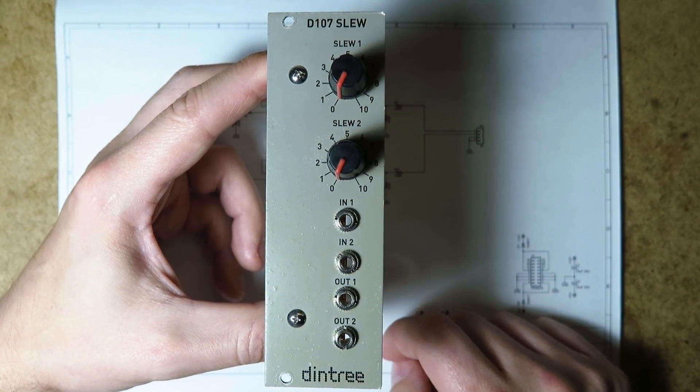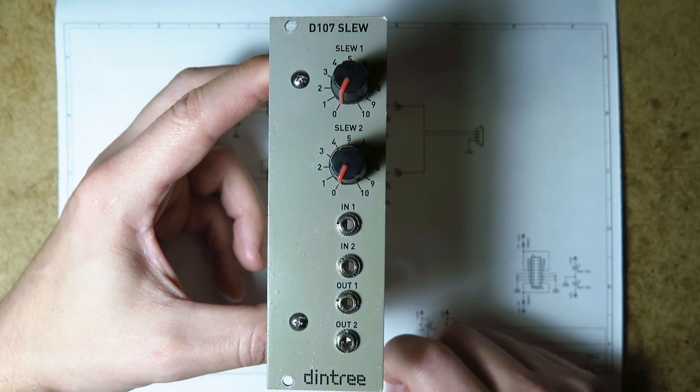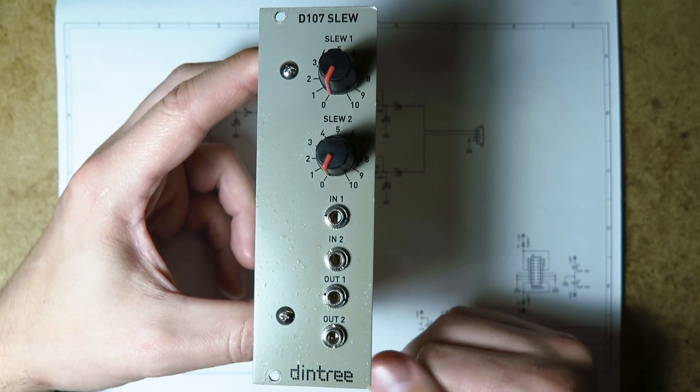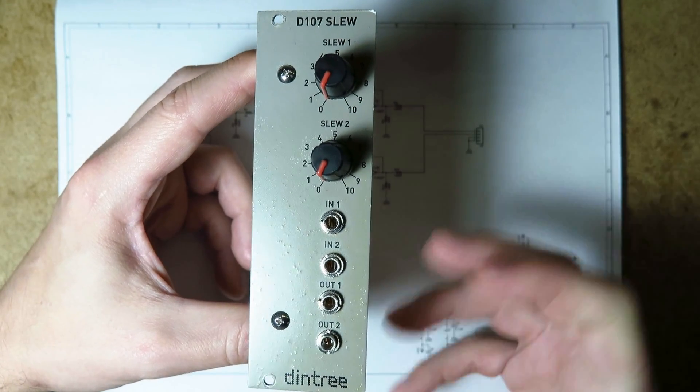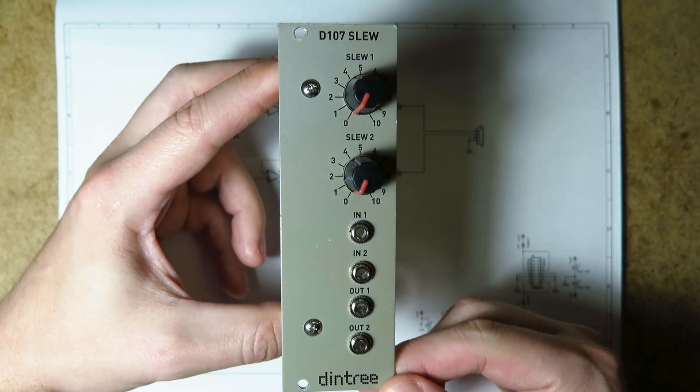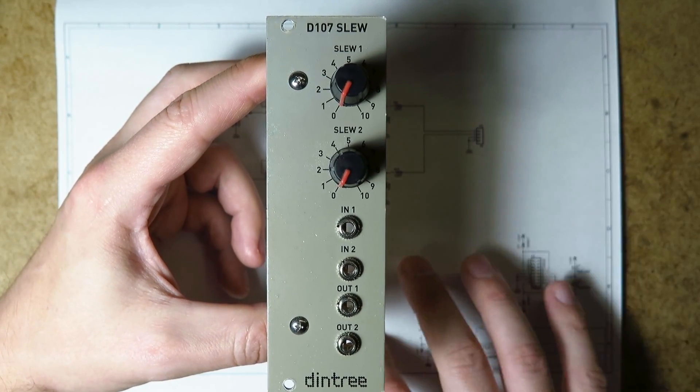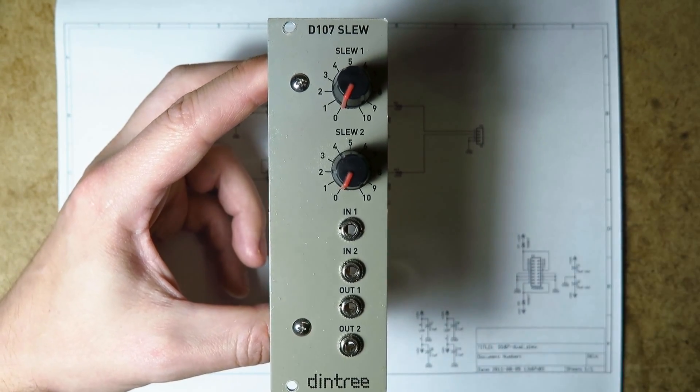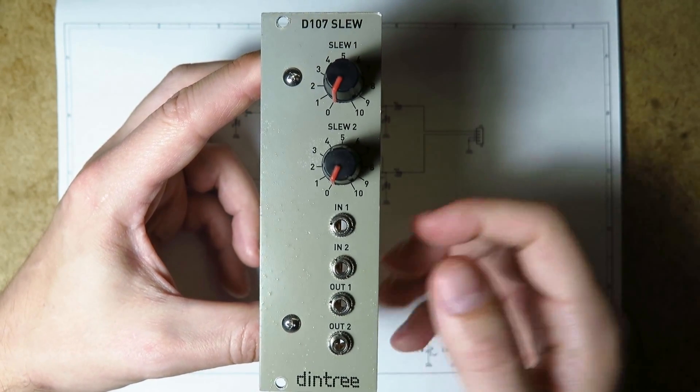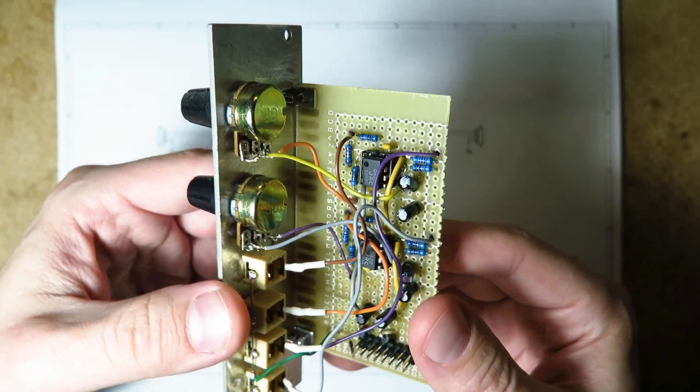Very typical circuit for doing things like portamento. There's other uses as well, but basically you can just slow a signal down. This is the traditional sort of sweep of a pitch as you press a key that's a few octaves higher than another key and it will slowly transition across. This is a really simple circuit.